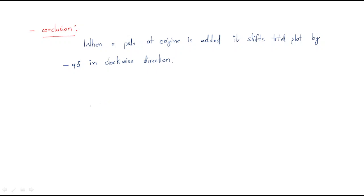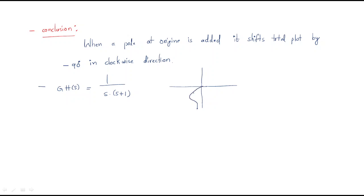Let's look at the plot for G(s) = 1/(s(s+1)) once again. The plot starts at omega equal to 0 and ends at omega equal to infinity, shaped like this.